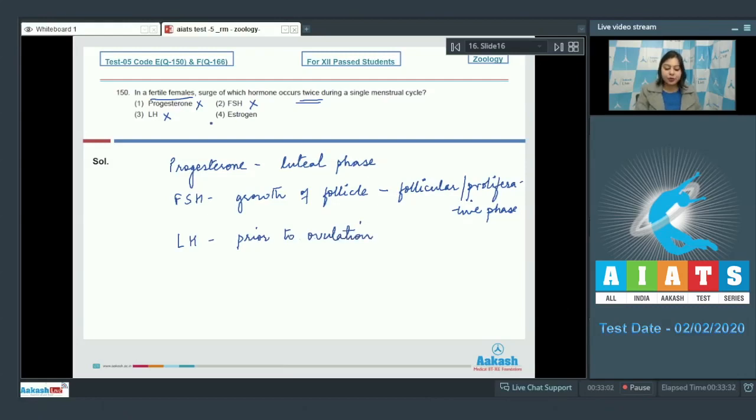Number 4. Estrogen is the correct option as estrogen surge occurs twice, that is during follicular phase as well as luteal phase. So, the correct answer becomes option number 4.